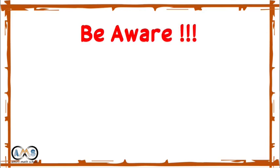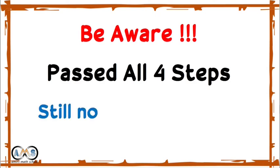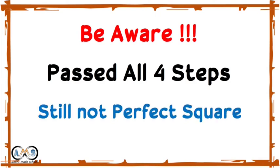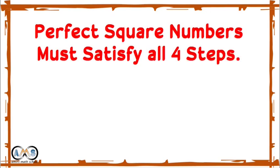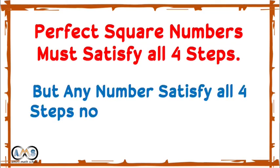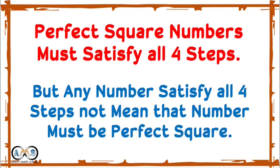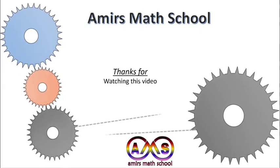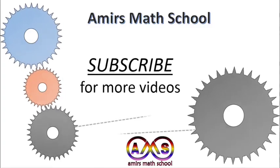Be aware: if a number passes all 4 steps, that does not necessarily mean it is a perfect square number. Perfect square numbers must satisfy all 4 steps, but any number satisfying all 4 steps does not guarantee it is a perfect square number.